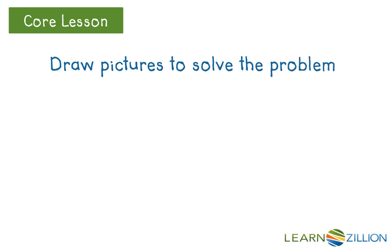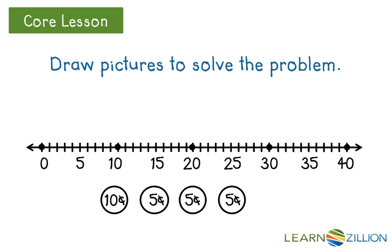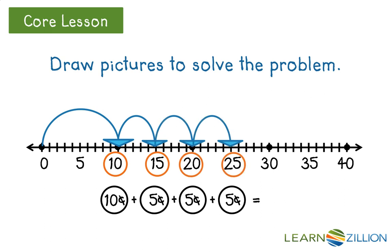Draw pictures to solve the problem. First draw the coins. We are going to use a number line to help us skip count. 10 cents. Now we will skip count the nickels: 5 cents plus 5 cents plus 5 more cents gets us to 25. So he has 25 cents. He does not have enough to lend her.